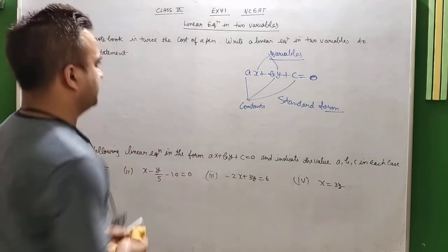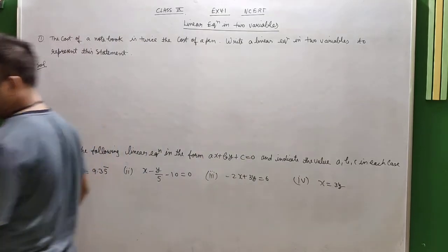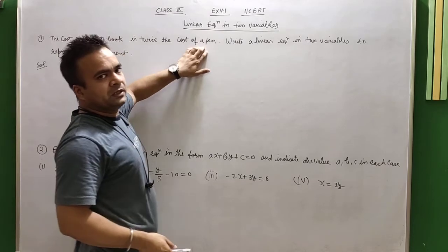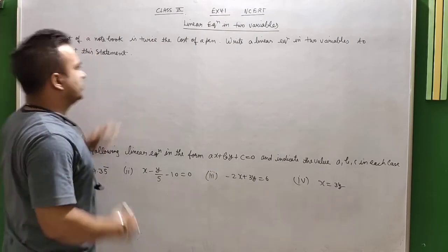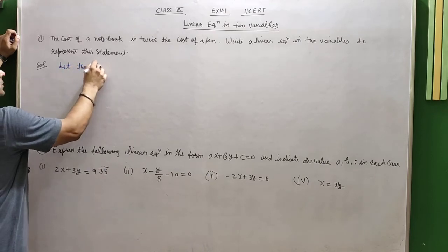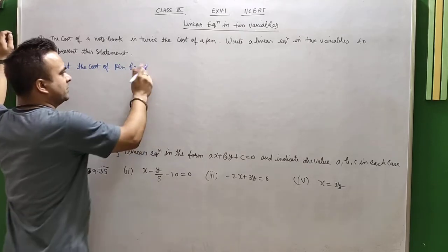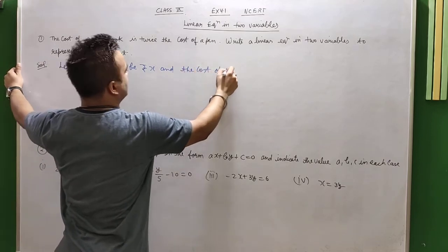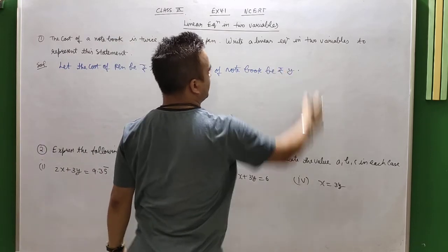If we talk about this question, there is nothing difficult in this question, just a particular relationship. You know that the cost of the notebook depends on the pen's cost. The pen's cost is twice your notebook's cost. Now we will use two variables. Let the cost of pen be x rupees and the cost of the notebook be y.